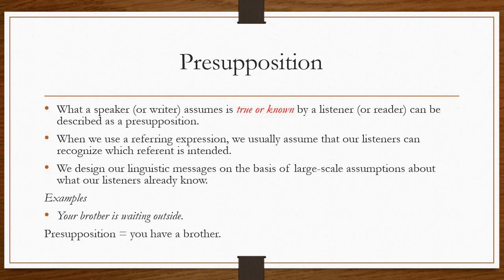When a speaker is speaking or a writer is writing, he assumes that whatever he is talking about is actually known by the listener or reader as well. That is called presupposition — he presupposes that the listener would know what he is talking about, or that whatever he is saying is true or would be considered true by the listener.